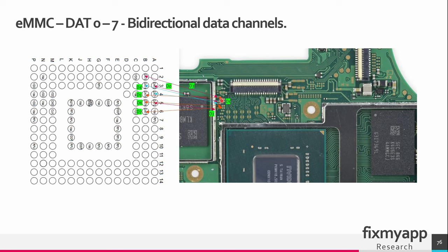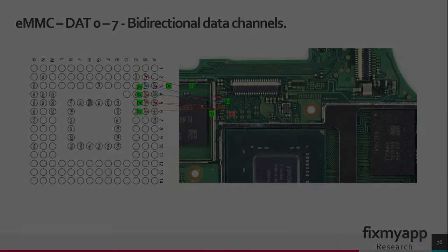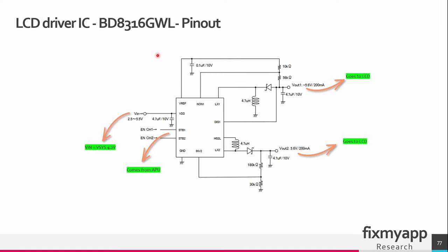This is the LCD driver used in all the Nintendo Switches — this is the part number. This LCD driver chip is a step-up and inverted two-channel switching regulator: channel 1 and channel 2. It will create a positive and a negative voltage for the LCD display, and the LCD needs this voltage to create an image.